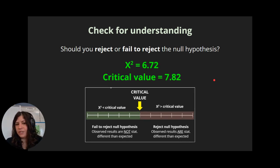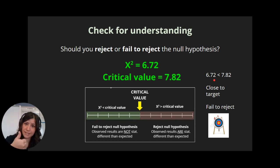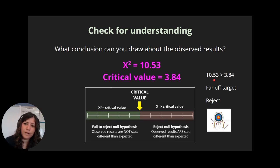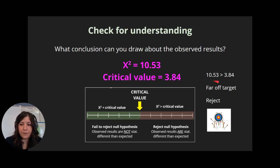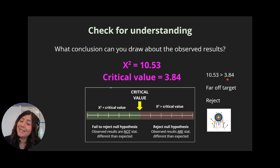Let's say our chi-squared is 6.72 and our critical value is 7.82. Since 6.72 is less than 7.82, that means we're close enough to the target, so we fail to reject the null hypothesis — these groups are not statistically significantly different. One more: if our chi-squared is 10.53 and the critical value is 3.84, then 10.53 is bigger than 3.84, so we're too far off from the target and we reject the null hypothesis — those results are statistically significantly different.